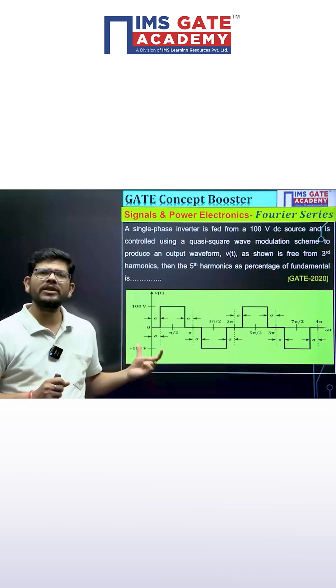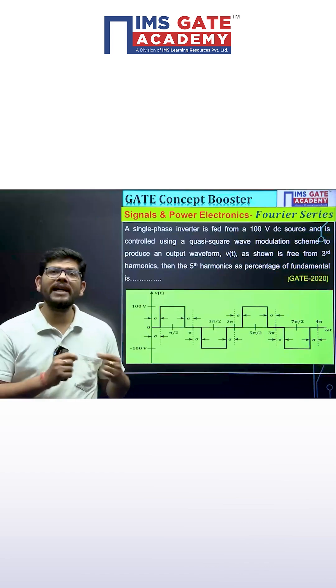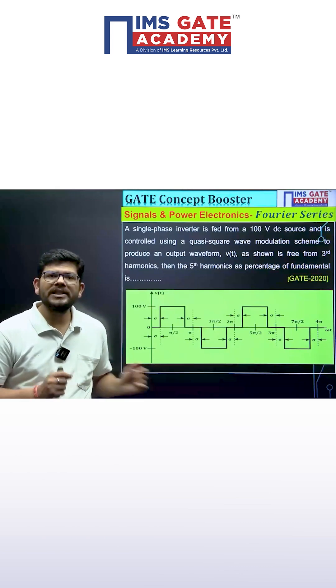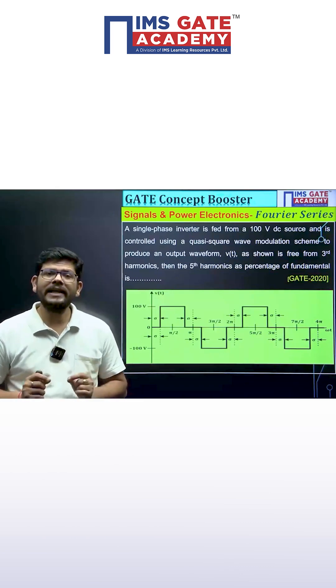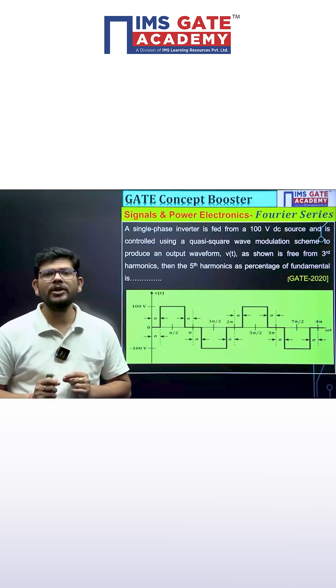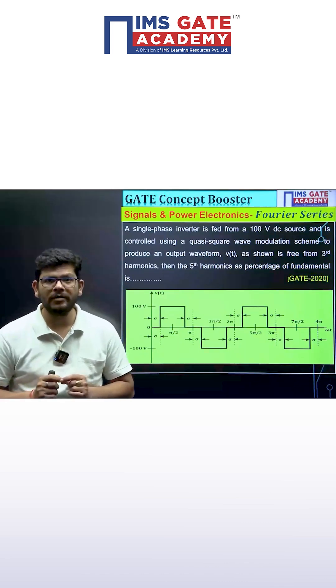For example, suppose this kind of question is given to you. This question came in the electrical paper of 2020. They have given a quasi square waveform and are saying that this waveform is free from the third harmonic voltage. Then what will be the ratio of fifth harmonic voltage with respect to the fundamental harmonic voltage?